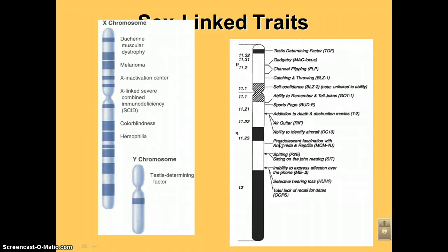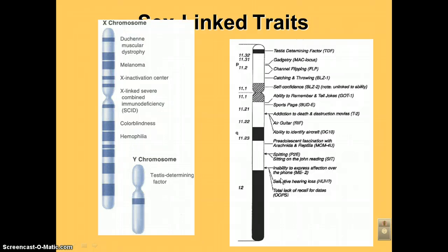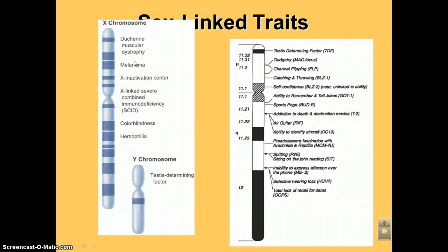Pre-adolescent fascination with arachnids, spiders, and reptiles — that one's for the moms. The ability to spit. Sitting on the toilet and reading — the Sit gene. Inability to express affection over the phone. Selective hearing locus. And total lack of recall for dates, especially anniversaries.